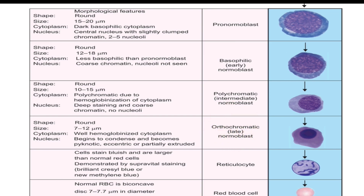Late orthochromatic erythroblasts: here the cytoplasm is deeply eosinophilic, giving the appearance of orthochromatic cells, and mitosis is absent. The nucleus is small and pyknotic. At the beginning, dark nuclear chromatin material is arranged in a typical pattern giving the appearance of a cartwheel. Finally, the nucleus disintegrates, hemoglobin synthesis increases and completes at this stage.